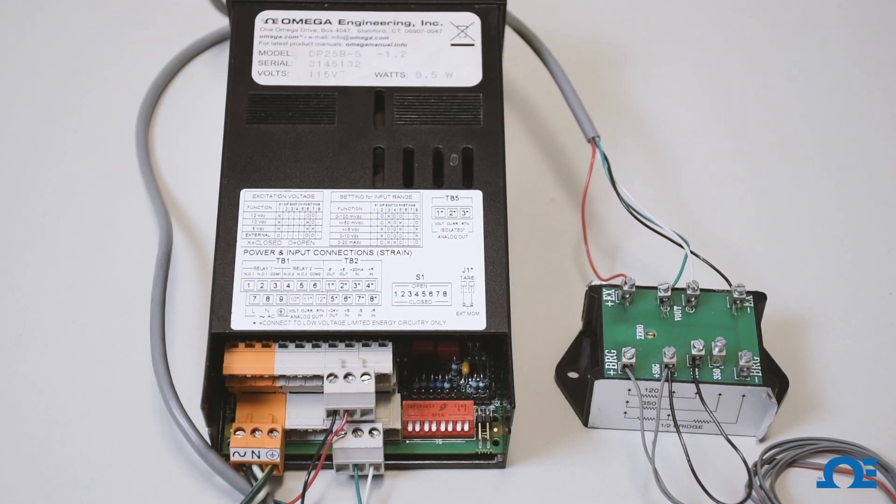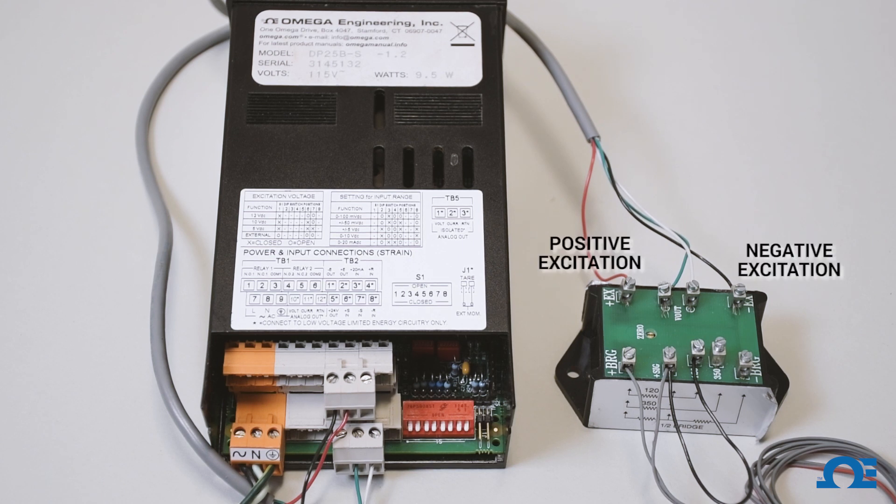Now that you have connected your strain gauge to the BCM-1 module, if you look on the right side of the BCM-1 module, you have positive excitation, negative excitation, and voltage out. Go ahead and connect that to the DP25B-S meter.